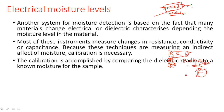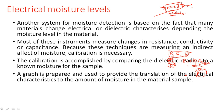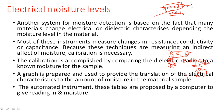Calibration is accomplished by comparing the dielectric reading to a known moisture level for the sample. The unknown measurement is compared with the known measurement, and a scale is designed accordingly before the product is developed. A graph is prepared and used to provide the translation of electrical characteristics to the amount of moisture in the material. Automated instruments use these tables, proposed by a computer, to give readings in moisture.